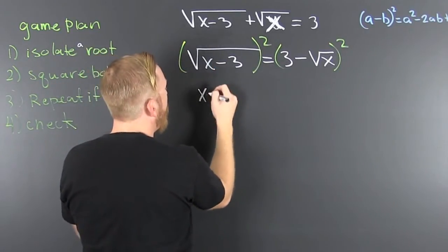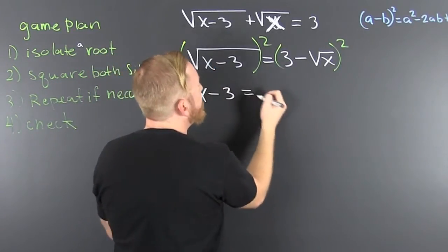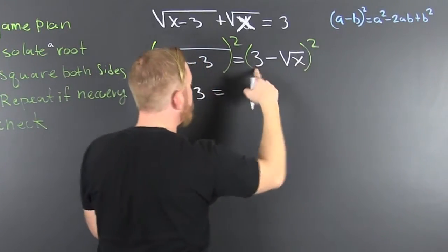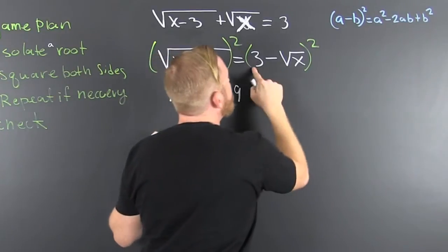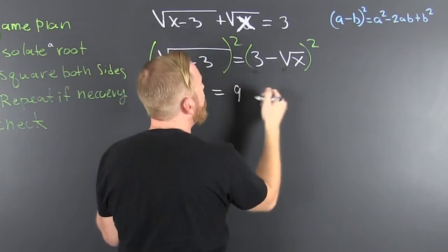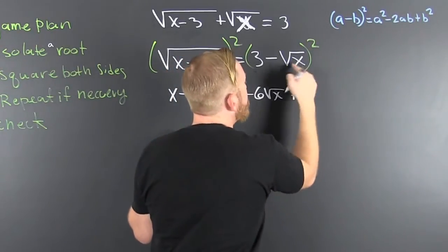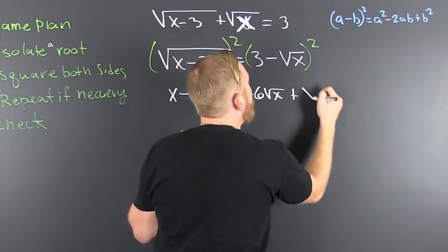That's the radicand, man. And then that's gonna be this guy squared: 9, this one times that one doubled: -6√x, and then plus this one squared: x.